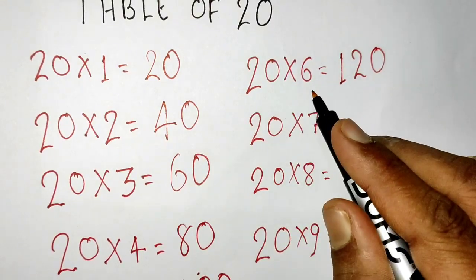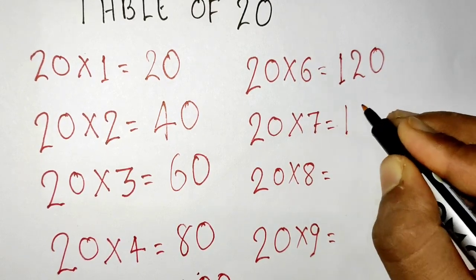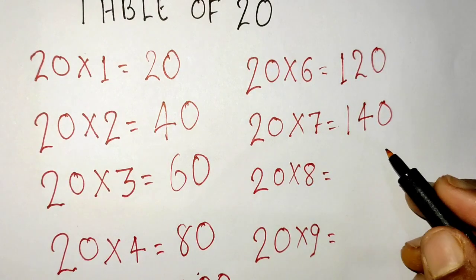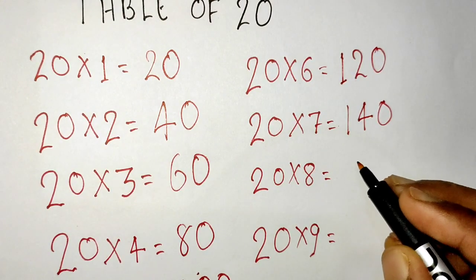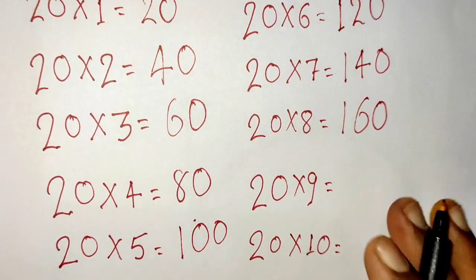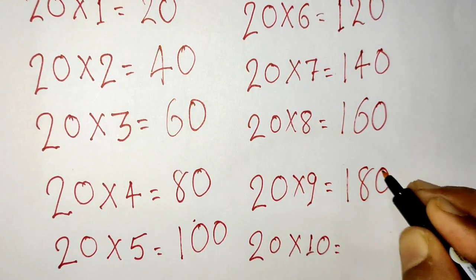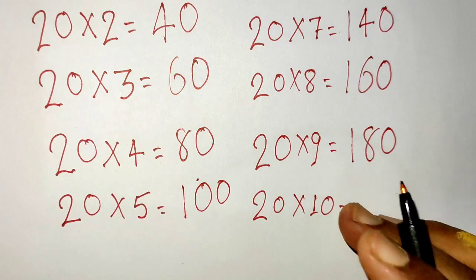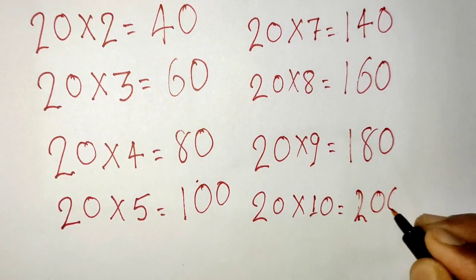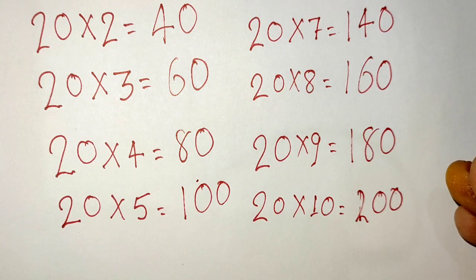20x7=140, 20x8=160, 20x9=180, and last 20x10=200. So now it's time to practice this table so the kids can practice with me.